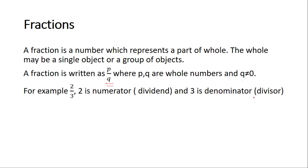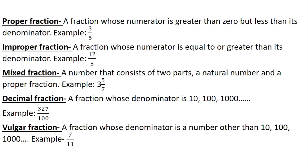3 is the denominator, also known as the divisor. Classification of fractions — how many types of fractions are there? The first one is proper fraction: a fraction whose numerator is greater than 0 but less than its denominator. As you can see in this example, 3 is the numerator and it is less than the denominator 5.